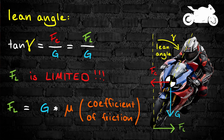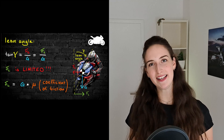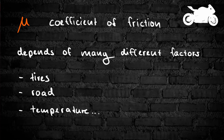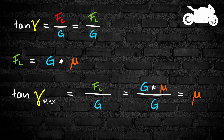Let's get back to the formula for the lean angle. The weight force Qi can be calculated from the mass of the motorcycle and the acceleration due to gravity. The lateral force, on the other hand, is limited and can be calculated from the weight force Qi and the coefficient of friction. The coefficient of friction depends on many different factors and it's not possible to determine exactly how large it is in your specific driving situation. Between a tire and the road, it's usually between 0.7 and 1, at least if it's not raining. As we see in the formula, the maximum lean angle in an idealistic scenario depends only on the coefficient of friction.